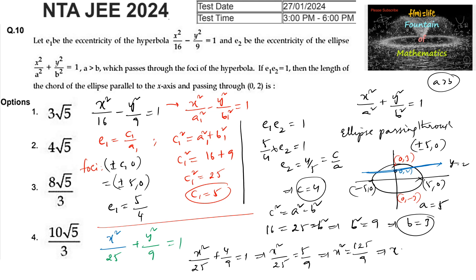From x²/25 = 5/9, we get x² = 125/9, so x = ±5√5/3. The x-coordinates of the chord endpoints are 5√5/3 and -5√5/3. Therefore the length of the chord is 2 × (5√5/3) = 10√5/3, which is option D.